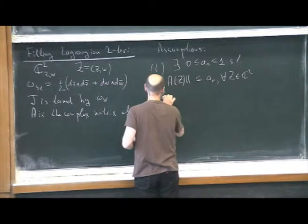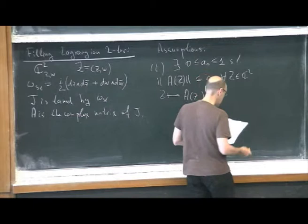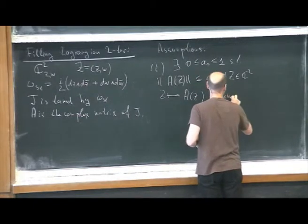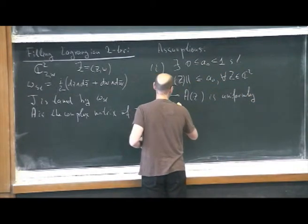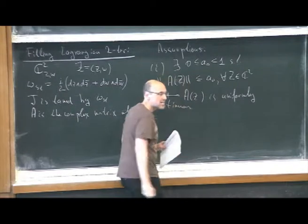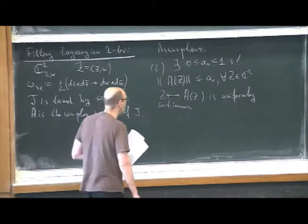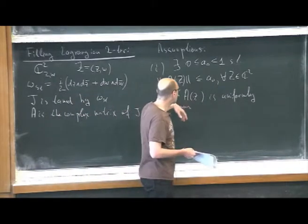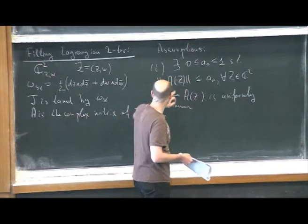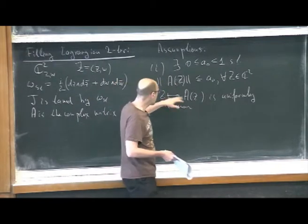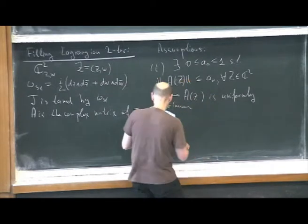I will impose a little bit stronger conditions. So the first assumption: there exists a constant A0 such that this norm is smaller or equal than A0 for every Z in C². This is the usual matrix norm induced by the standard Euclidean metric of R⁴. We also suppose that this map Z is uniformly continuous on C². This is for some technical reasons in order to have good global isoperimetric properties for the structure. In applications, the support of this fraction will be compact.